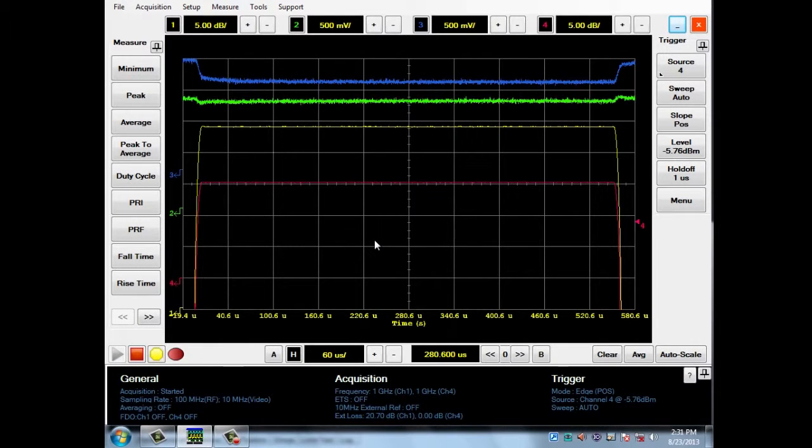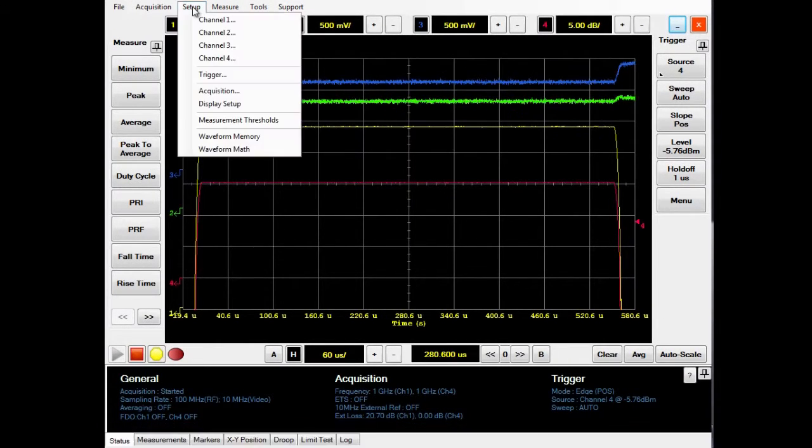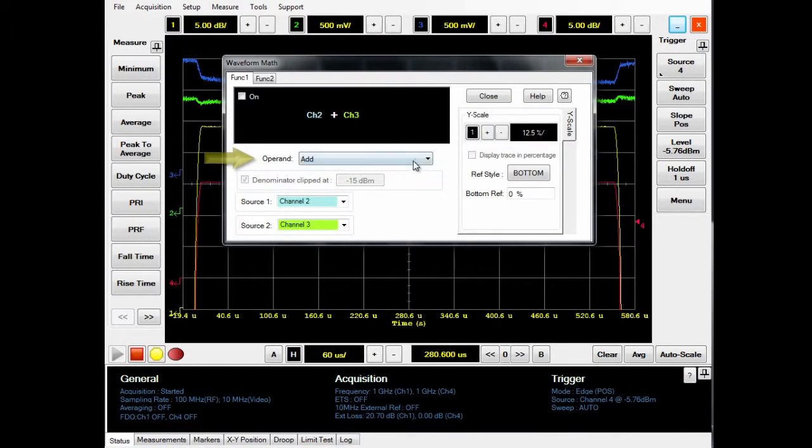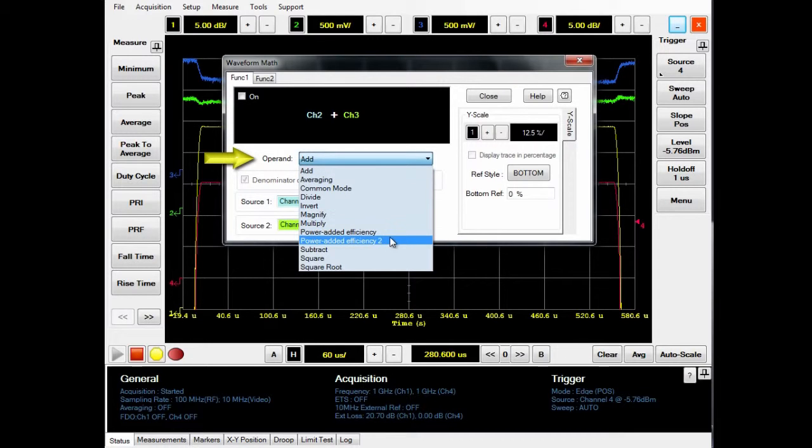In order to measure the PAE percentage, first go to the setup menu, then choose the waveform math option. From the drop down menu, select power added efficiency number 2.